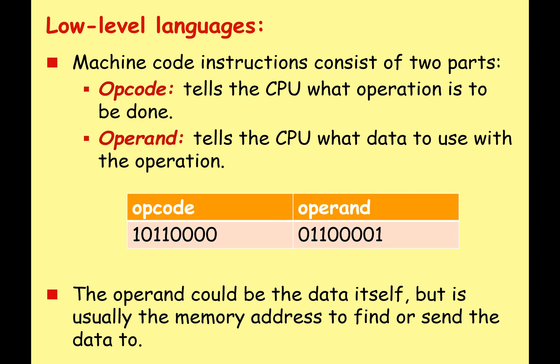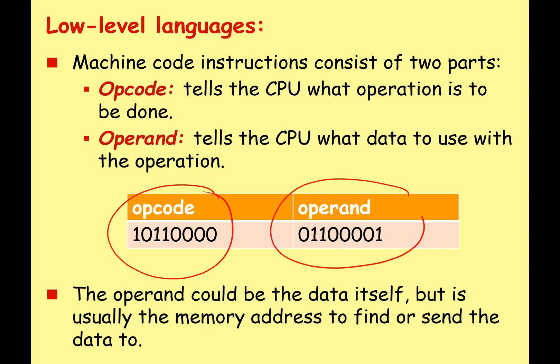Machine code instructions consist of two parts. We can break a sequence of ones and zeros into: the opcode and the operand. The opcode, or operation code, tells the computer what operation to perform — load, add, subtract, etc. The operand is the data the computer has to use with the opcode. Sometimes the operand could be the data itself, but more usually it's the memory address — the location in memory where the data to work with can be found.